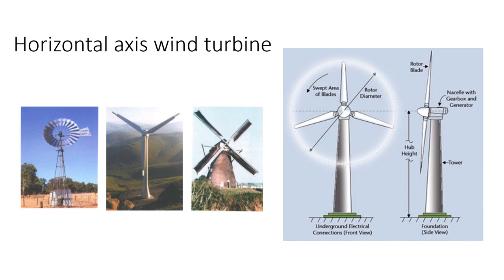Since a tower produces turbulence behind it, the turbine is usually positioned upwind of its supporting tower. Turbine blades are made stiff to prevent them from being pushed into the tower by high winds. Additionally, the blades are placed a considerable distance in front of the tower and sometimes tilted forward into the wind by a small amount.